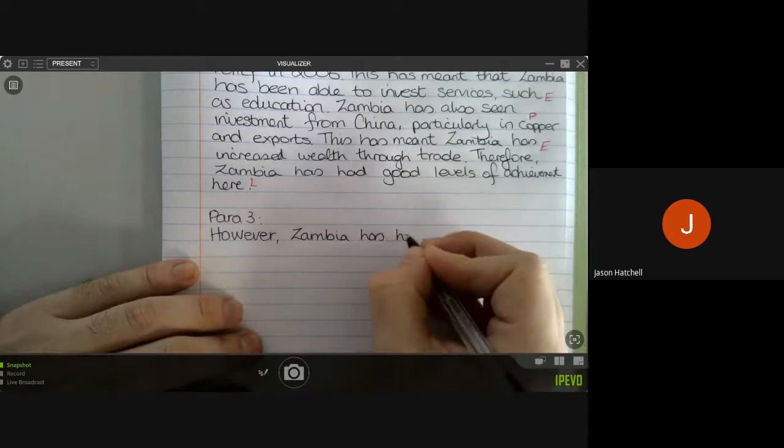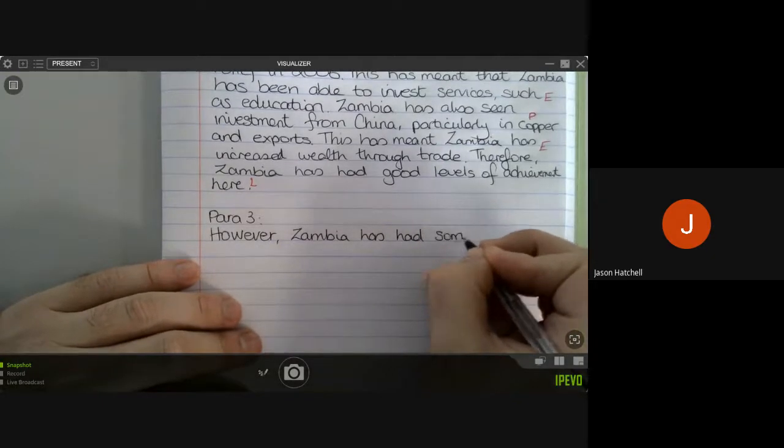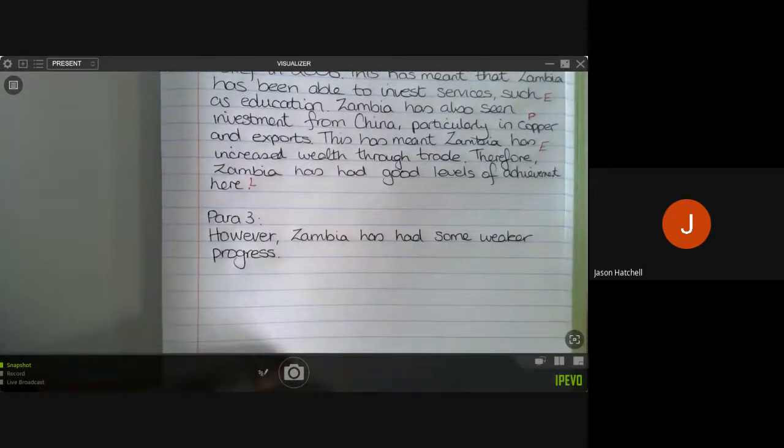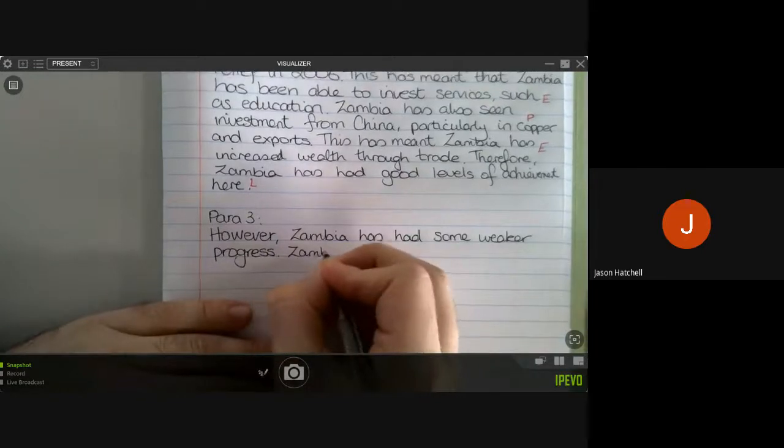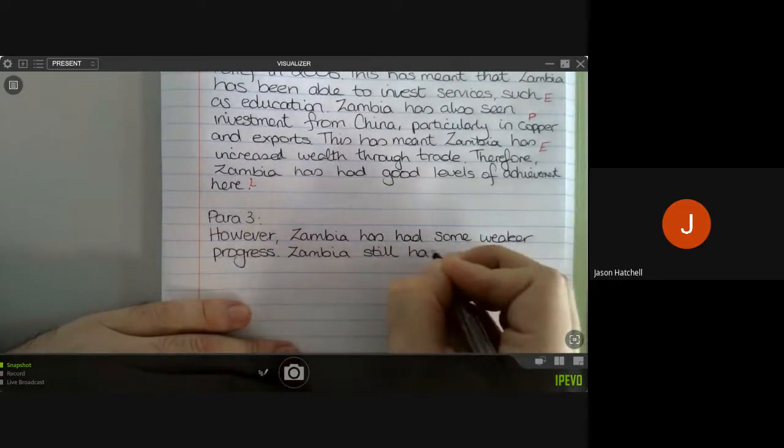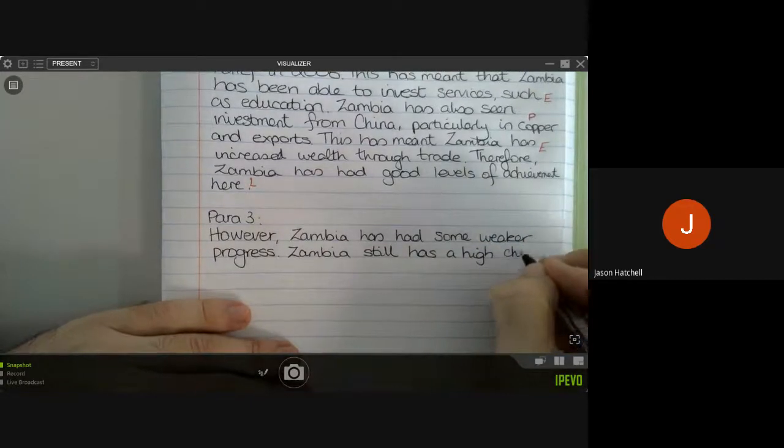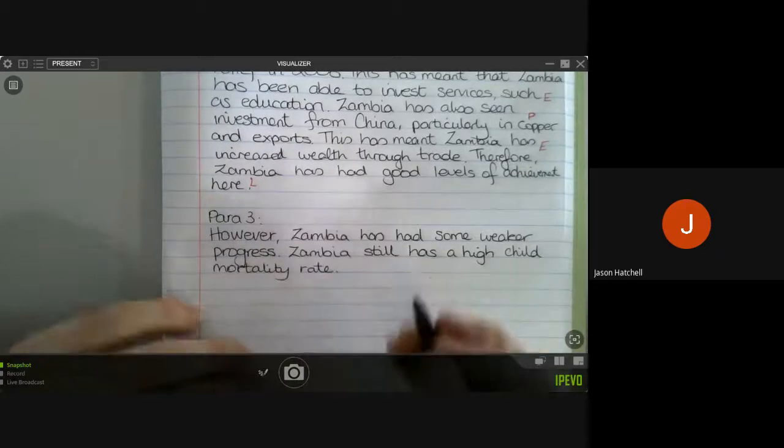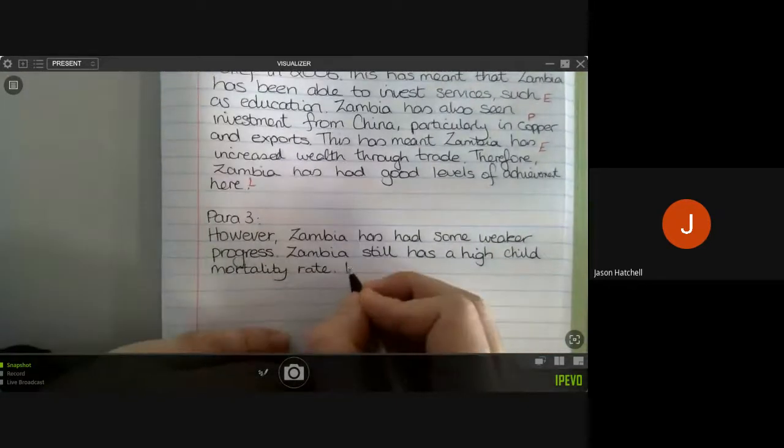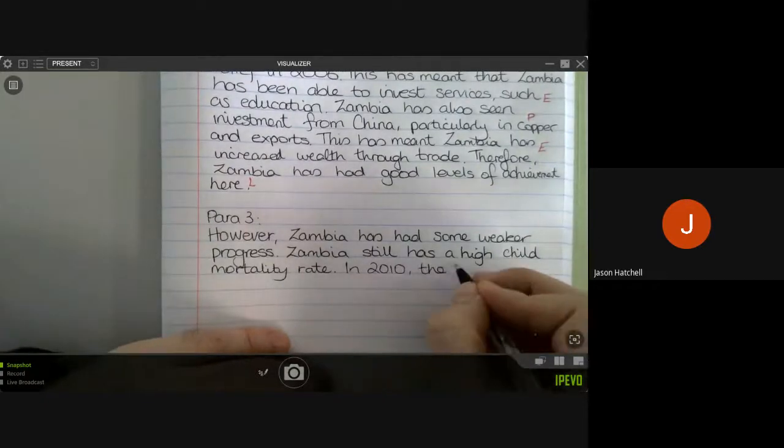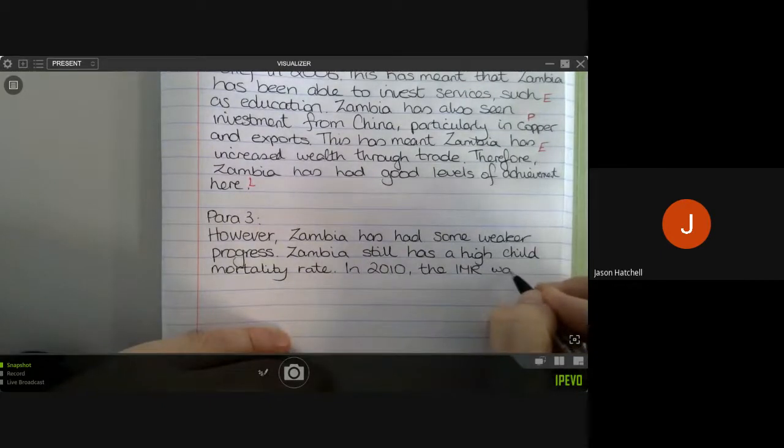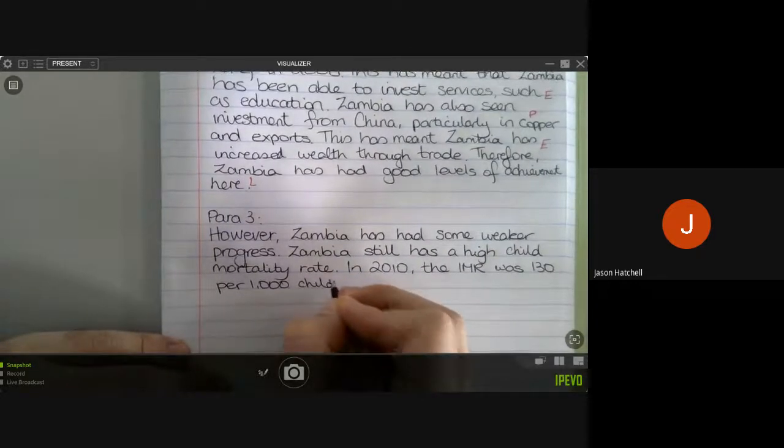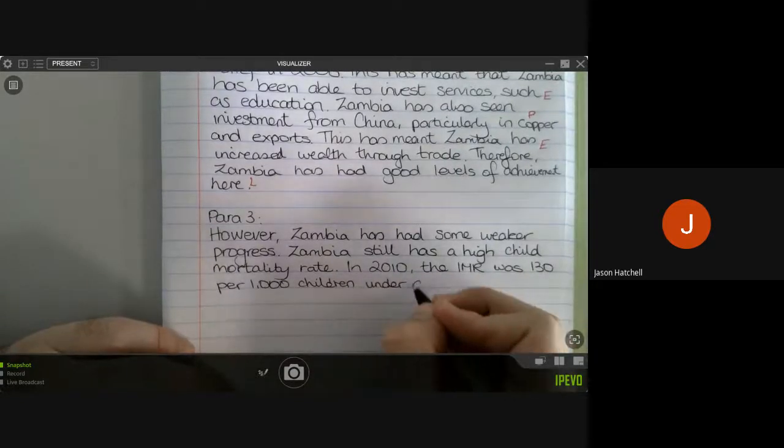Now, we'll refer back to what we said earlier. Zambia still has a high child mortality rate. And then we know that in 2010, the infant mortality rate, or IMR, was 130 per 1,000 children under age 5.